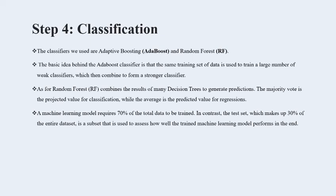Step 4: classification. The classifiers used are AdaBoost and random forest. The basic idea of AdaBoost is that the same training set of data is used to train a large number of weak classifiers, which then combine to form stronger classifiers. As for random forest, it combines the result of many decision trees for greater prediction. The majority vote is the predicted value for classification, while the average is the predicted value for regression. A machine learning model requires 70% of the total data for training and 30% for the test set.